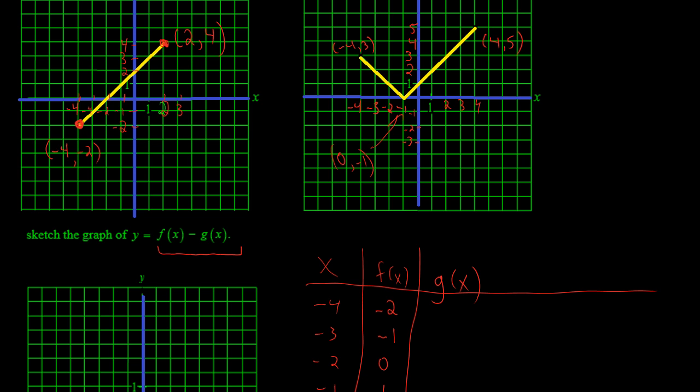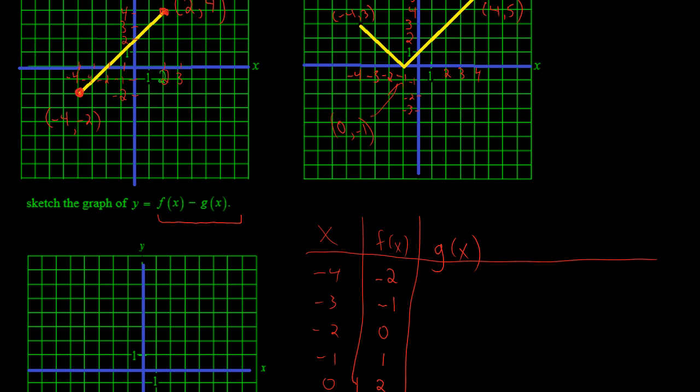So I just want to get the y values for this graph. So negative 4 is a 3. And you can see it just decreases by 1. So this is nice. It's 2 at negative 3. At negative 2, it would be 1. And negative 1 is 0, right? Negative 1 and 0, right here.